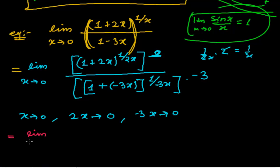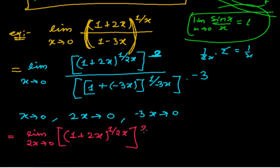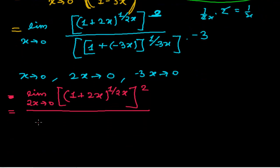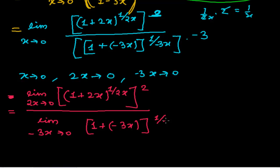So now, when 2x tends to 0, we can write: [(1 + 2x)^(1/(2x))]², and this exactly matches the standard form. Again, when minus 3x tends to 0, we write: [(1 + (−3x))^(1/(−3x))]^(−3). Here, 2x is acting as x, and minus 3x is acting as x in the standard form.